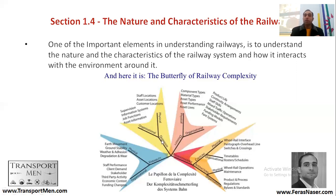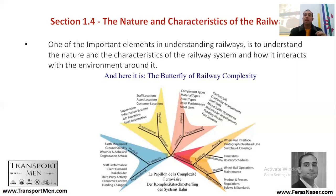The second aspect of complexity is dispersion. The railway is dispersed all over the country — staff locations and asset locations are spread everywhere. This raises the question of how we can control such a system, and also how organizational supervision and information systems handle assets whose information may be in different places.